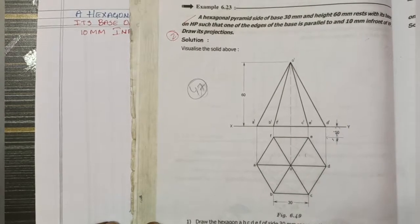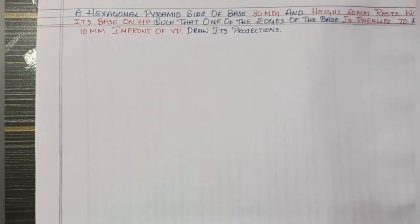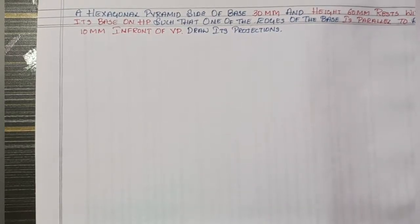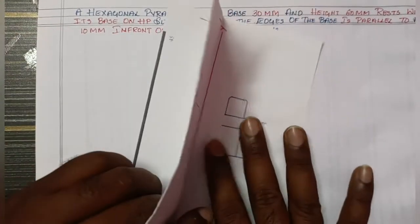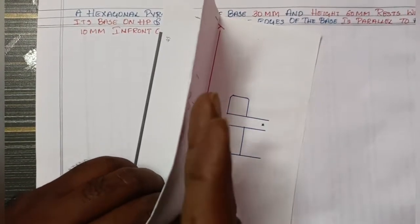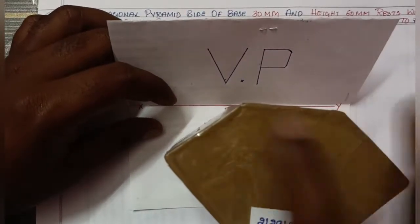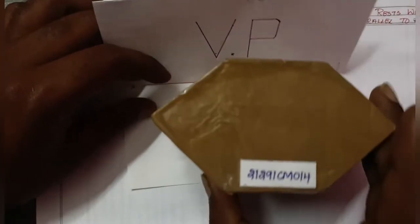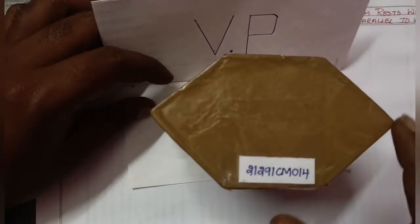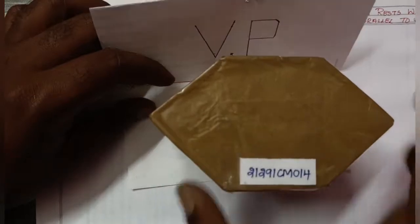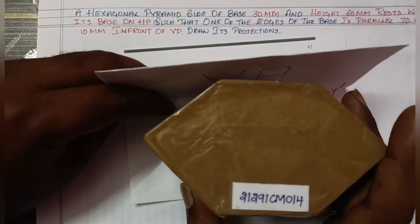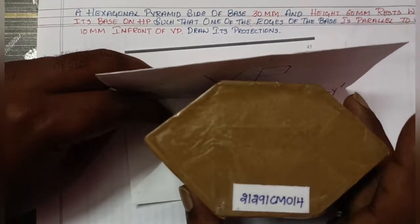Let's start the demo. We are going to start with first angle projection. This is HP and this is VP. The hexagonal base is the same — it's a hexagon.